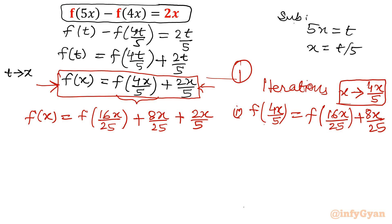Now 2nd iteration is about to come. Now 16x over 25. So in the 2nd iteration we will consider f of 16x over 25 in the left hand side. So what I am going to do in equation 1, I am going to replace x by 16x over 25.